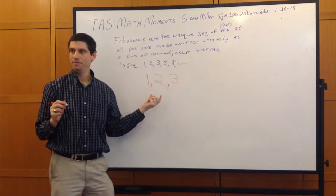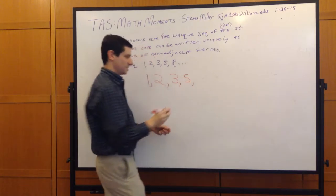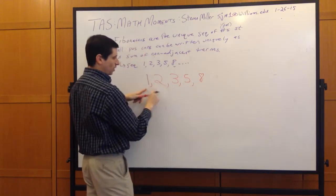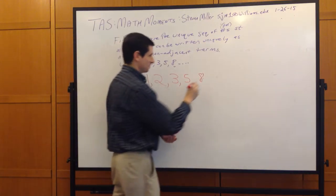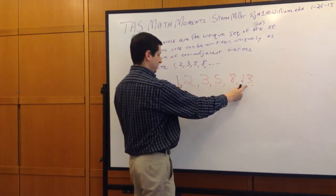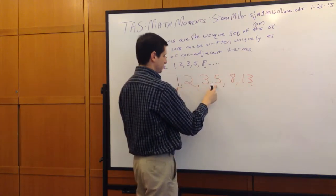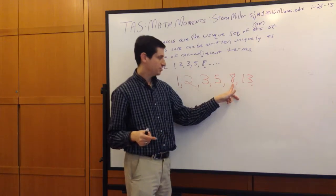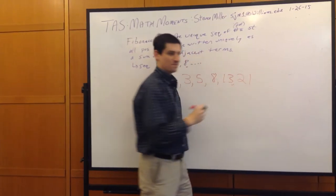I can get 6, 7, 8 — working through: 5 plus 1, 5 plus 2, 5 plus 3, and 1 plus 3 plus 8 gives 12. For 13, I can't build it from the existing terms without adjacency, so I add 13. Then 17 is 13 plus 3 plus 1, 18 is 13 plus 5, 19 is 13 plus 5 plus 1, 20 is 13 plus 5 plus 2. Can I get 21? 13 plus 8 is adjacent, so I can't — I have to add 21.